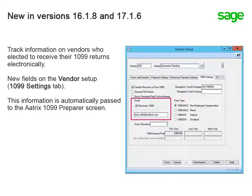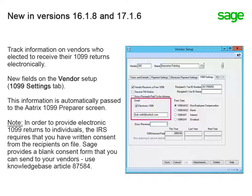On top of the changes to comply with government reporting, in the year-end versions 16.1.8 and 17.1.6, there are also new fields in the Vendor Setup. These let you track information on vendors who have elected to receive their 1099 returns electronically. This information is automatically passed to the Atrix 1099 Preparer screen. If you plan to provide electronic 1099 returns to recipients, the IRS requires that you have written consent on file from these individuals. Sage provides a blank form for this purpose. Use Knowledge Base Article 85784.